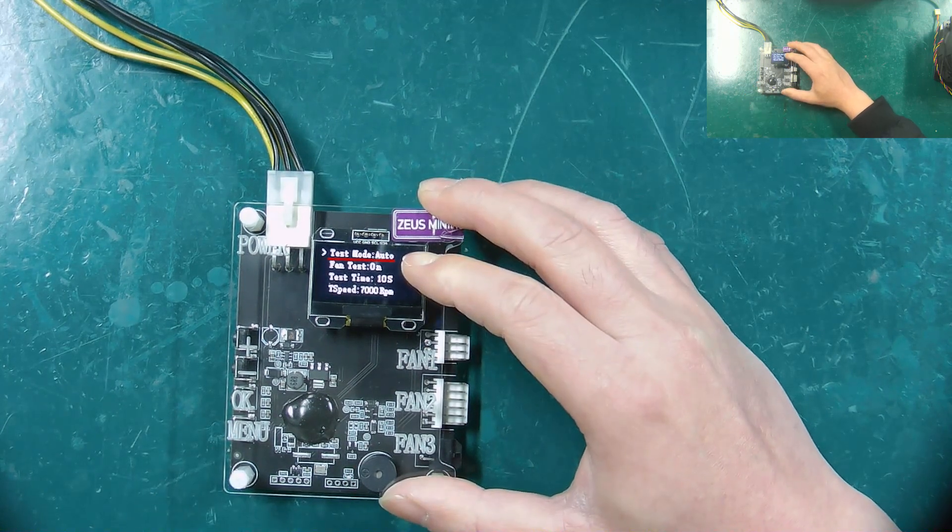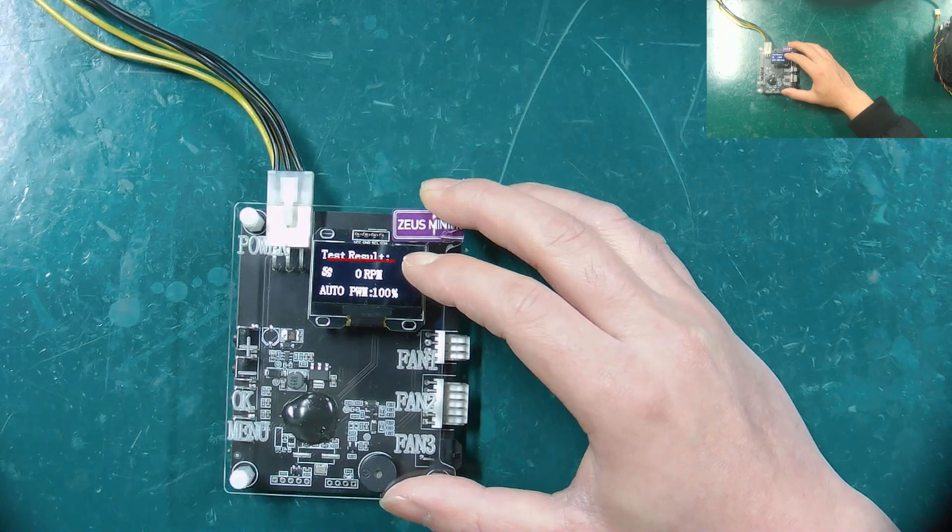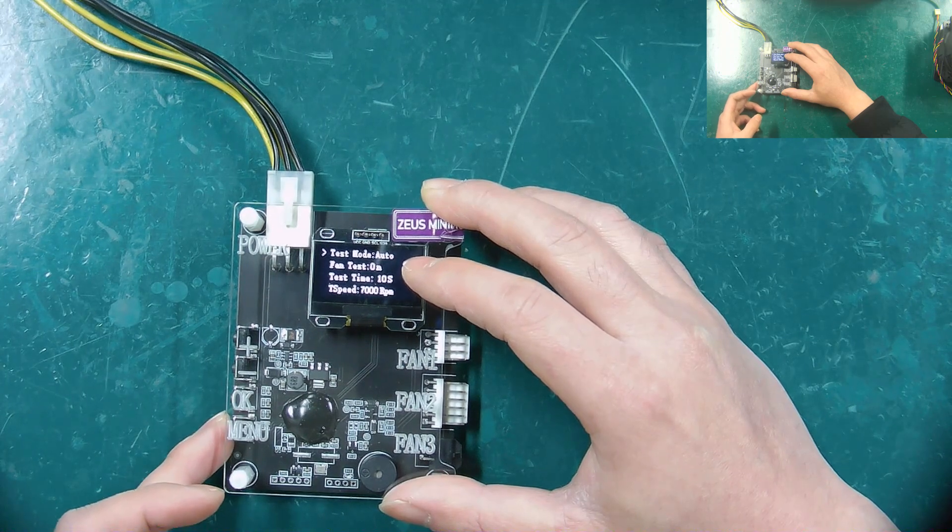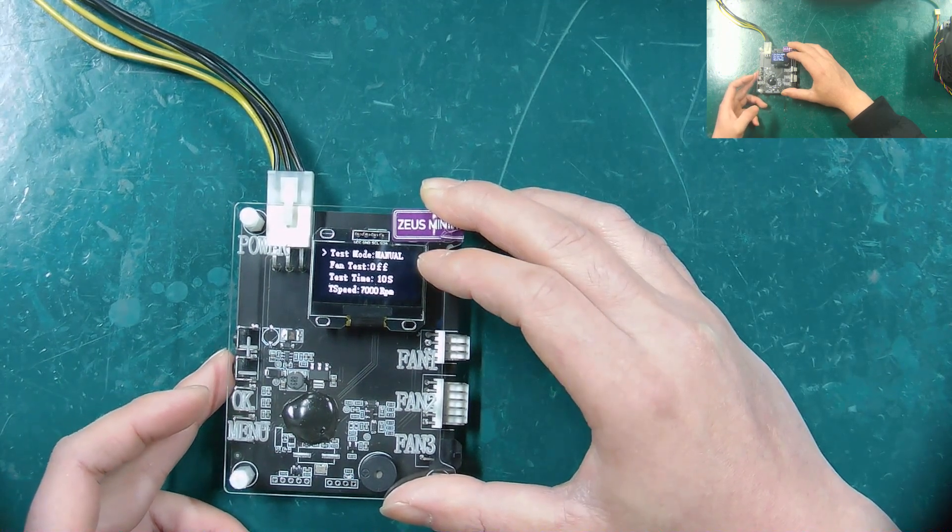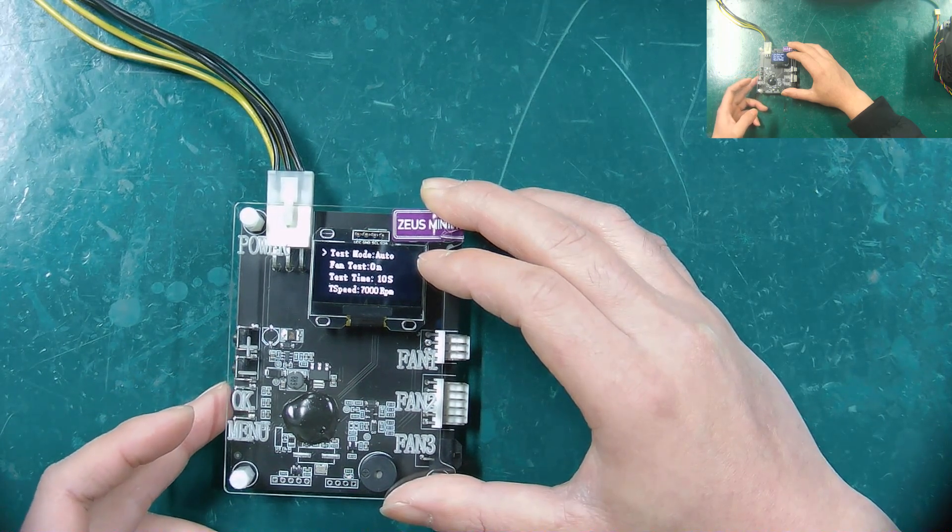The first row displays the test mode of the fan tester, which can be divided into automatic and manual. Generally, we use automatic mode. Pressing the minus button will set it to manual mode, while pressing the plus button will set it to automatic mode.